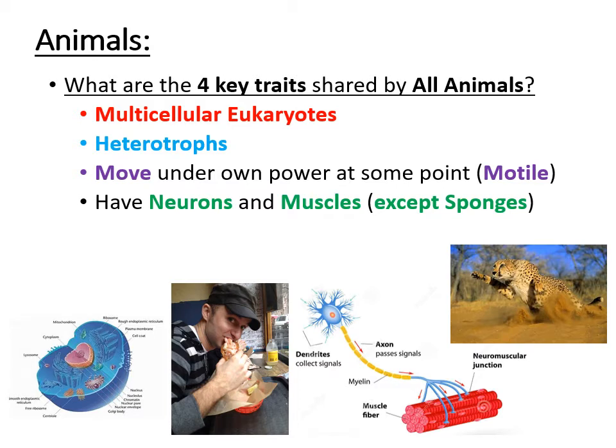The first trait is that all animals are multicellular eukaryotes. Each animal you encounter will have more than one cell, and each of their cells will have a nucleus and internal membranes because they're eukaryotes — as opposed to prokaryotes, which are things such as bacteria and archaea.